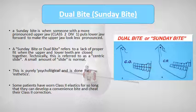Dual bite or Sunday bite: a Sunday bite is when someone with a more pronounced upper jaw (Class 2 Division 1) puts the lower jaw forward to make the upper jaw look less pronounced. Sunday bite or dual bite refers to lack of proper fit when the upper and lower teeth are closed together; technically this is referred to as eccentric slide. A small amount of slide is normal. Some patients have worn Class 2 elastics for so long that they can develop a convenience bite and achieve their Class 2 correction.